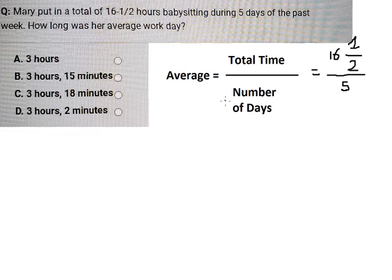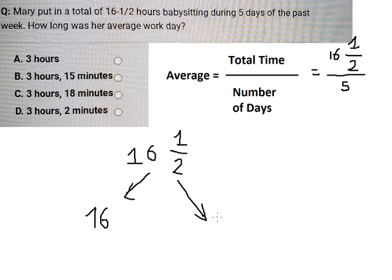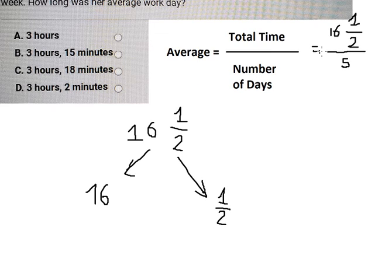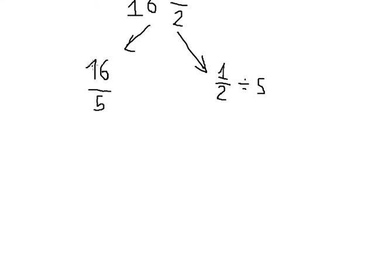I will show you how to answer. First we have 16 and 1/2. We need to separate them into 16 and 1/2. We put 5 down here and divide this one by 5. For the first one, we need to multiply by 3 because 5 times 3 equals 15.